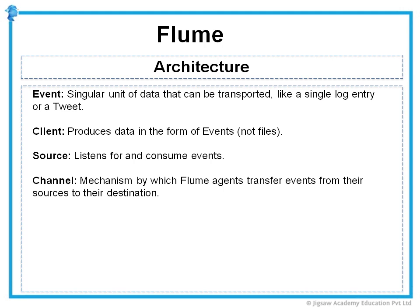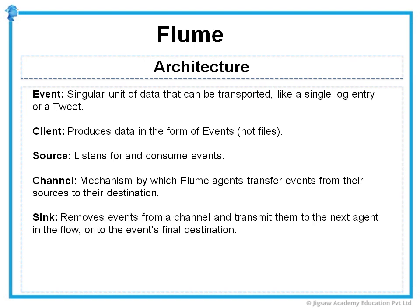Then we have Channel. Channels are the mechanism by which Flume agents transfer events from their sources to their sinks. They are a transient store for these events before they are drained by the sinks. A source stores an event in the channel where it stays until it is consumed by a sink. This temporary storage allows source and sink to run asynchronously. Then we have the Sink, which is an interface implementation that can remove events from a channel and transmit them to the next agent in the flow or to the event's final destination. Sinks that transmit the event to its final destination are also known as terminal sinks, and the Flume HDFS sink is an example of a terminal sink.